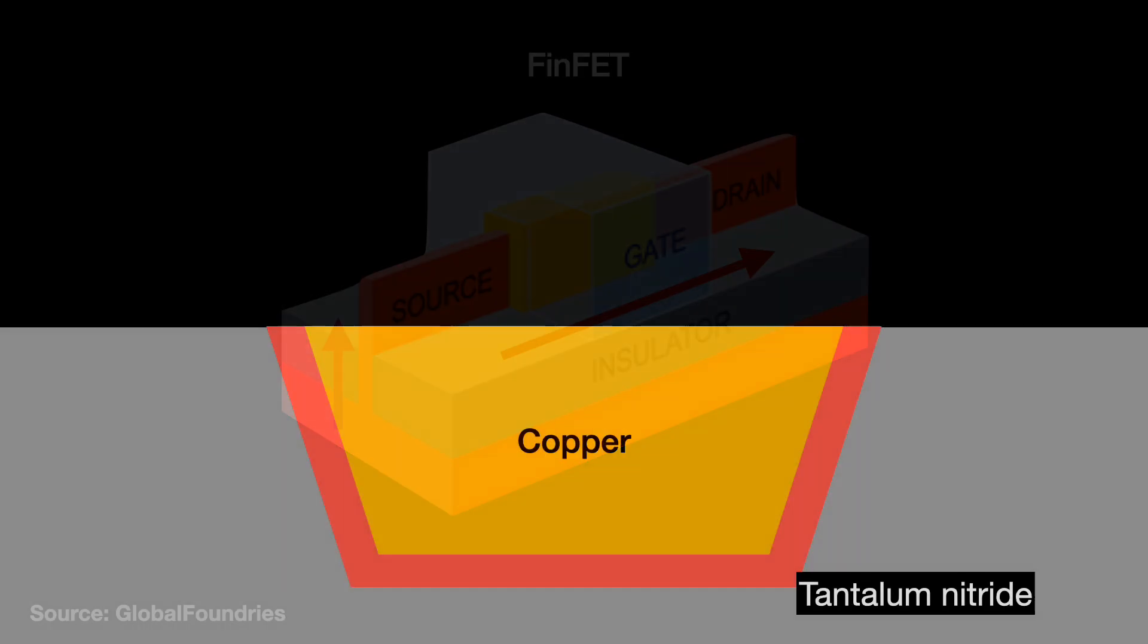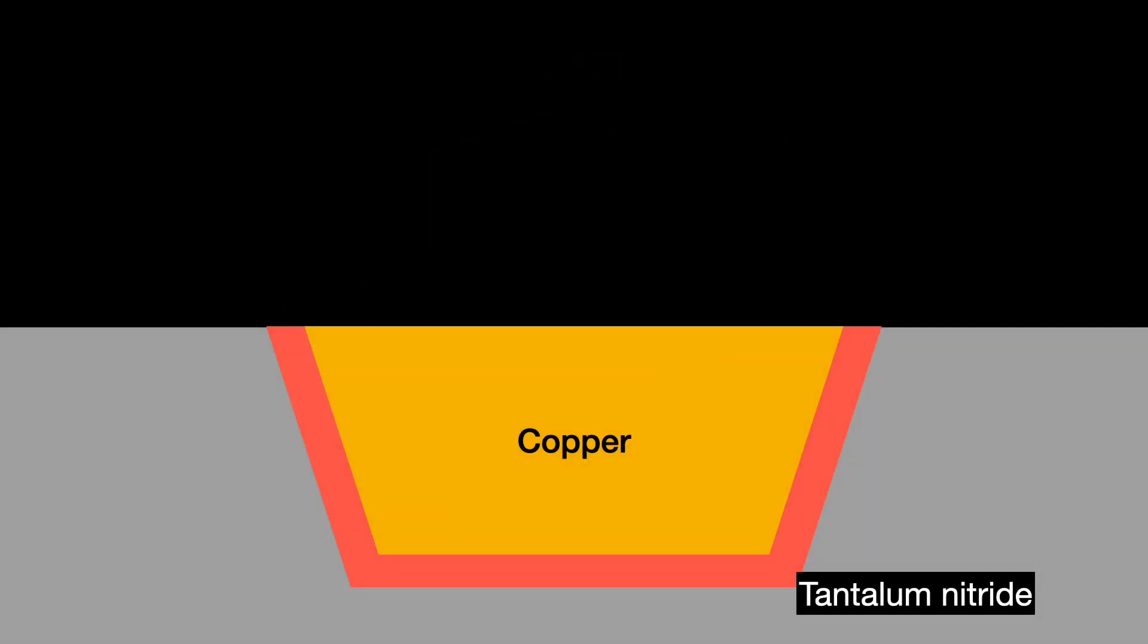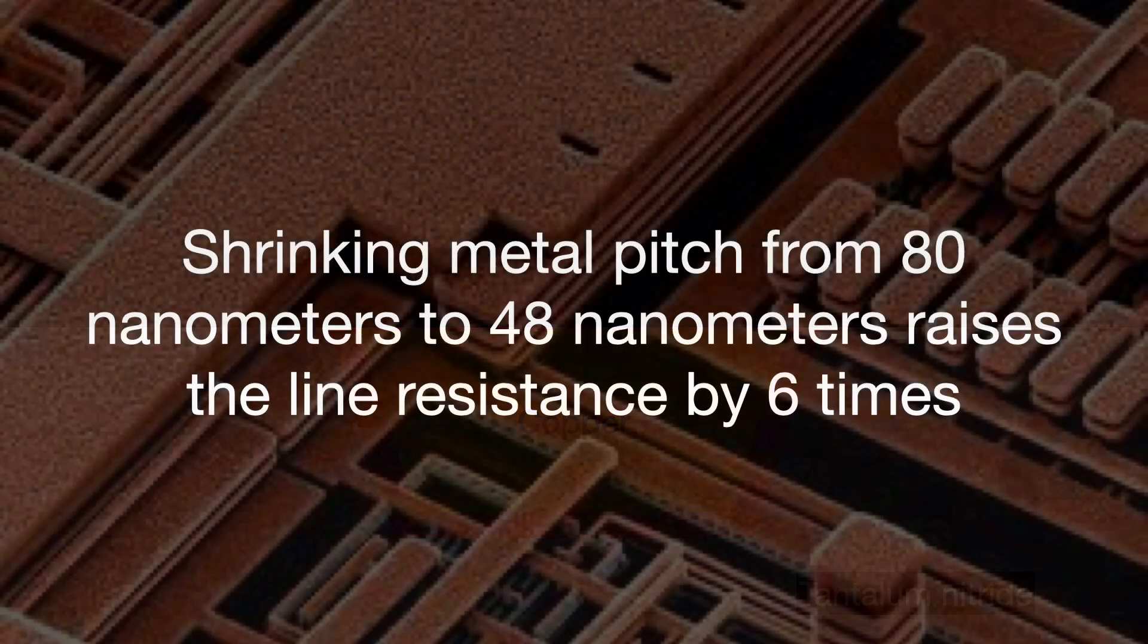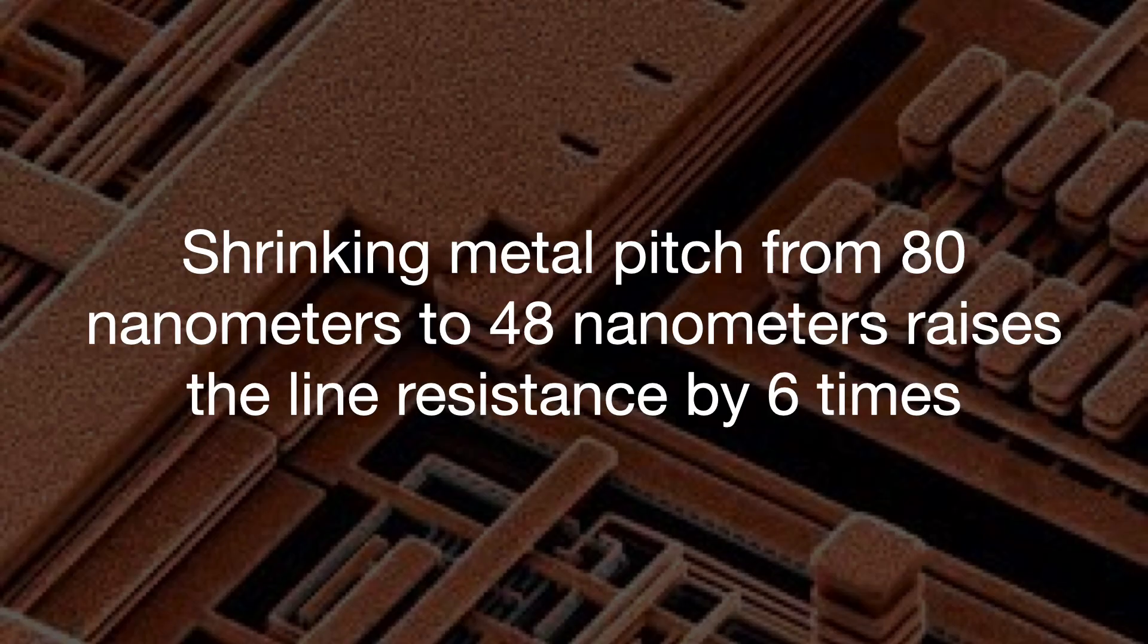A similar effect is behind the parasitic resistance in the metal interconnects. Leading-edge interconnects are made from copper surrounded by a barrier layer of tantalum nitride. As the interconnect shrinks, the tantalum nitride layer stays the same size. So the proportion of low resistance copper to high resistance tantalum nitride decreases, increasing the interconnect's total resistance. For example, cutting the metal pitch from 80 nanometers to 48 nanometers of 40% reduction raises the line resistance by six times.